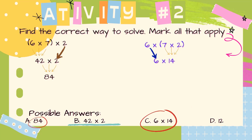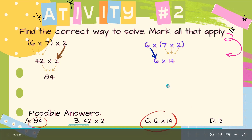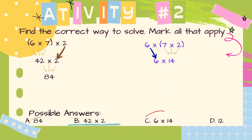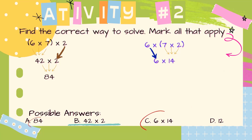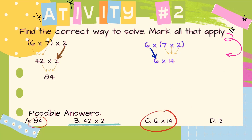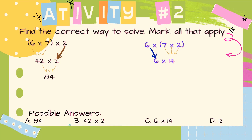Very good, we have 3 answers so far. But we cannot stop working — we have to do the last step, because we never know if we're going to have all the choices. To multiply 6 times 14, we can use repeated addition, or we can use another multiplication property we already studied: the distributive property of multiplication, which allows us to break apart one of the factors. We can break apart 14 into 7 plus 7, giving us 6 times 7 and 6 times 7, which is 42 plus 42.